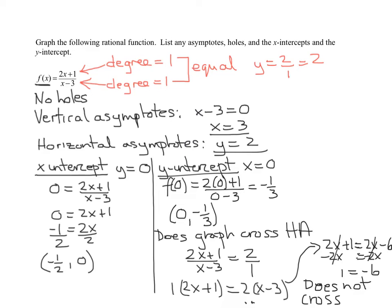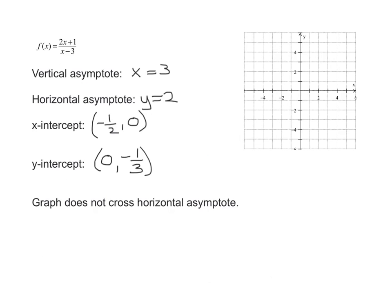So now we've found all our information. Now we're ready to go on to the next slide and actually graph it. So I've put all the information we found on the other slide on here. We've got our asymptotes, our intercepts, and the fact that it doesn't cross the horizontal asymptote.